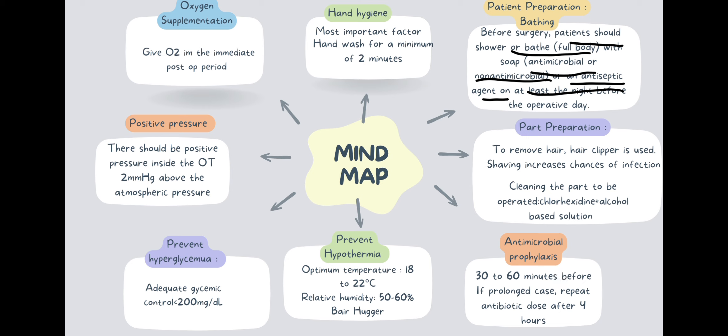The first thing in part preparation is hair removal. Earlier shaving used to be done, but we found that shaving increases the chances of infection because it can cause injuries. So now we do hair clipping. We can clean the part with betadine, which is povidone iodine, or we can use chlorhexidine plus alcohol-based solution, and this is more effective.